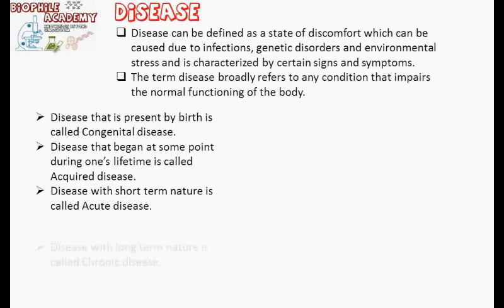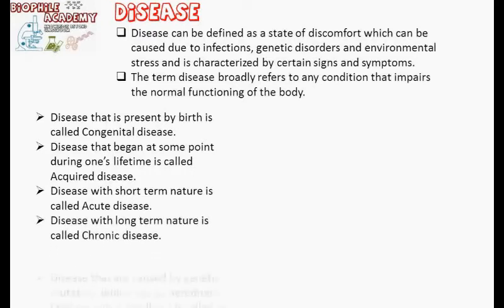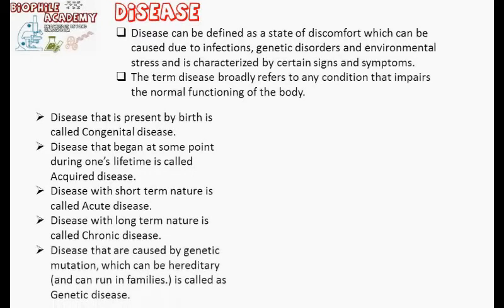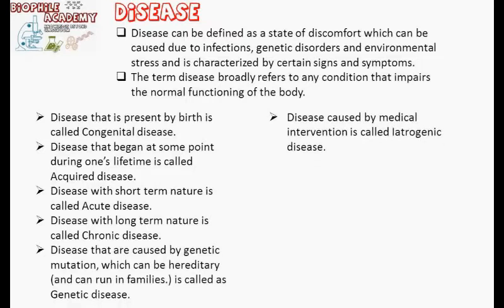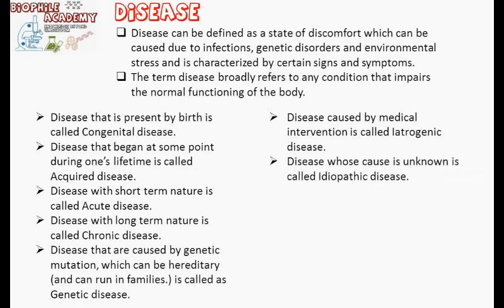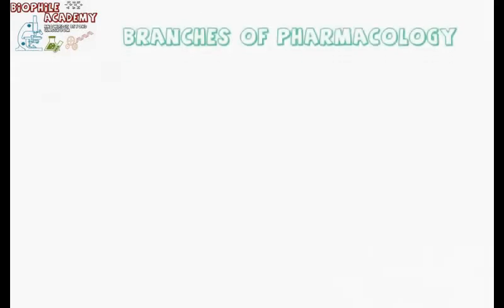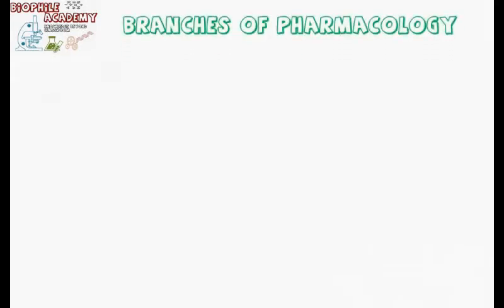Disease with long-term nature is called chronic disease. Disease caused by genetic mutation which can be hereditary and can run in families is called genetic disease. Disease caused by medical intervention is called iatrogenic disease. Disease whose cause is unknown is called idiopathic disease.